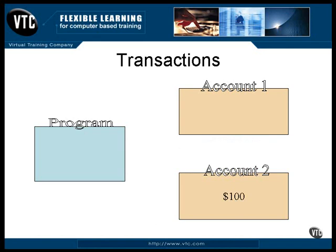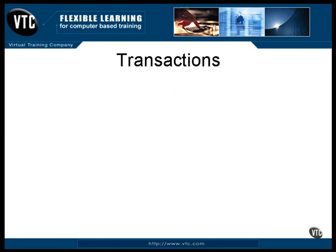This is a very simple example, but you can imagine transactions that consist of several operations. Unless every one of them completes successfully, none of them are completed, and everything is left in its original state. You can see where this would be critical in a multi-tiered and distributed system. Enterprise Java Beans can be used to implement a complicated transaction.